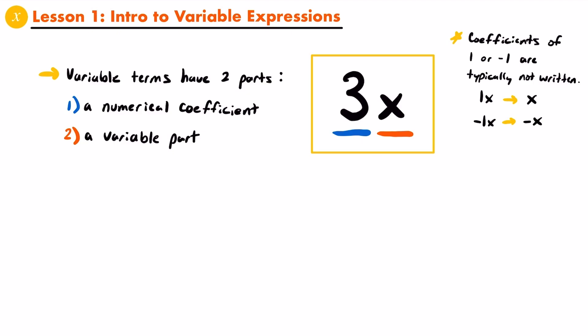Also, a coefficient of 0 usually doesn't really happen. Because if you have 0 times anything, it's just equal to 0. So if you have a coefficient of 0, your whole variable term just becomes 0 — which at that point, it's really not even a term. It's nothing.